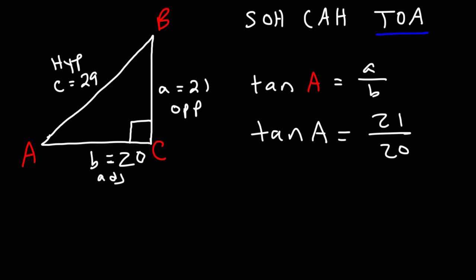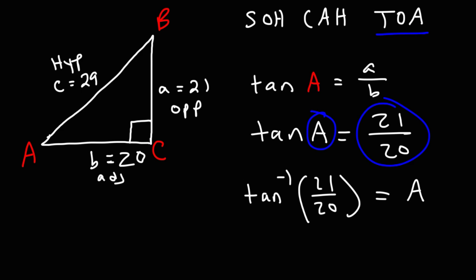To get the angle from a tangent value, we use the inverse tangent (arc tangent) function. If tangent of angle A equals 21 over 20, then angle A = arctan(21/20). Using a calculator — make sure it's in degree mode, not radian mode — you get angle A = 46.4 degrees.